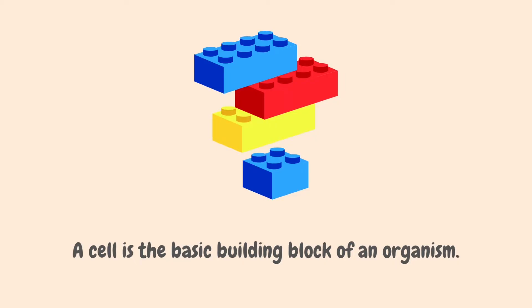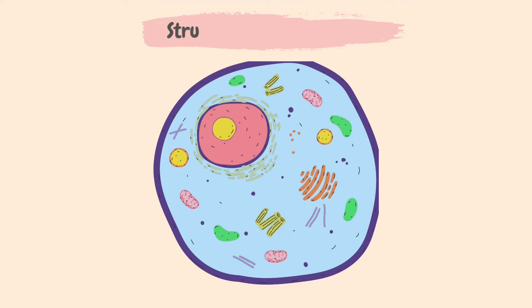Let's look at the structure of an animal cell first. It's important to be able to identify the parts of an animal cell and understand what each part or organelle does.